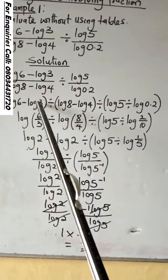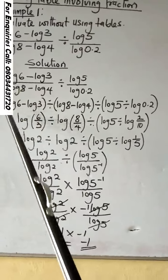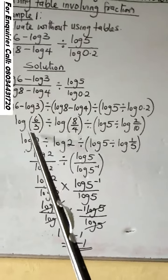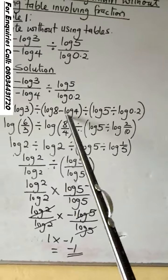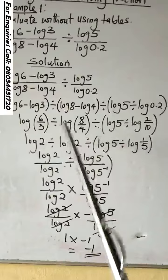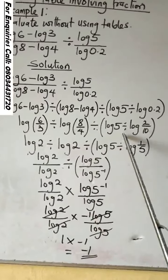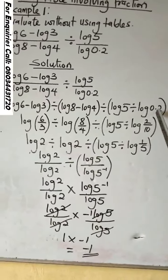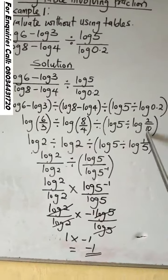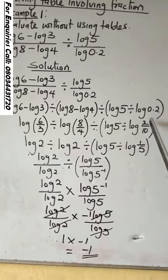Log 6 minus log 3. We take one of the logs. It will be 6 divided by 3. The same thing applies here. It will be 8 divided by 4. Then in this one, change the decimal to fraction. It will give us 2 over 10.